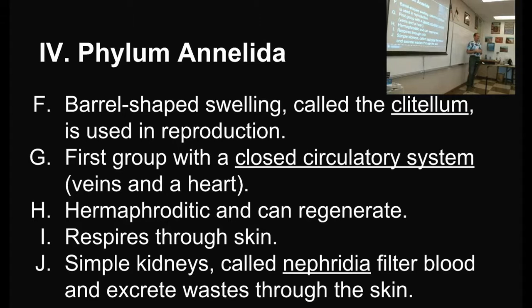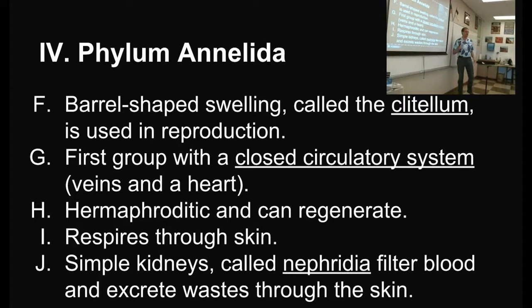Amphibians also respire through their skin but they have lungs in addition; annelids just respire through skin alone. They also have very simple kidneys called nephridia that filter blood and excess wastes out through the skin — so they don't pee; their waste products go out through their skin. They do poop though — as you saw in the dissections, lots of them were pooping as you played with them.